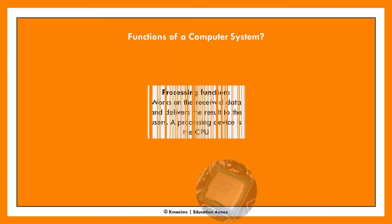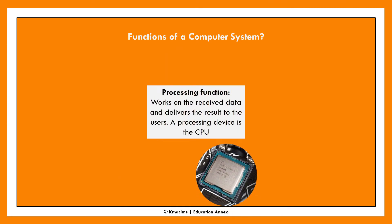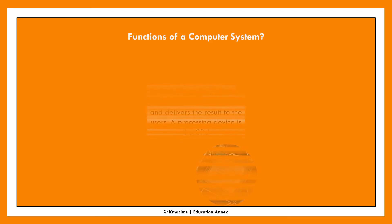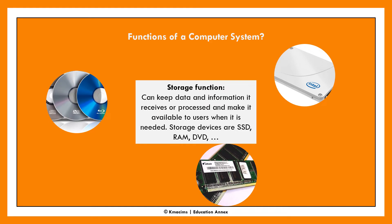The processing function allows the computer to work on the data it receives, and the result of the computation or operation is delivered to the user. An example of the hardware for processing is the central processing unit or microprocessor. The storage function helps the computer to keep data and information it receives and make it available to users in the future when requested. Examples of storage devices include the RAM, the SSD, the HDD, the DVD, and the flash drive.